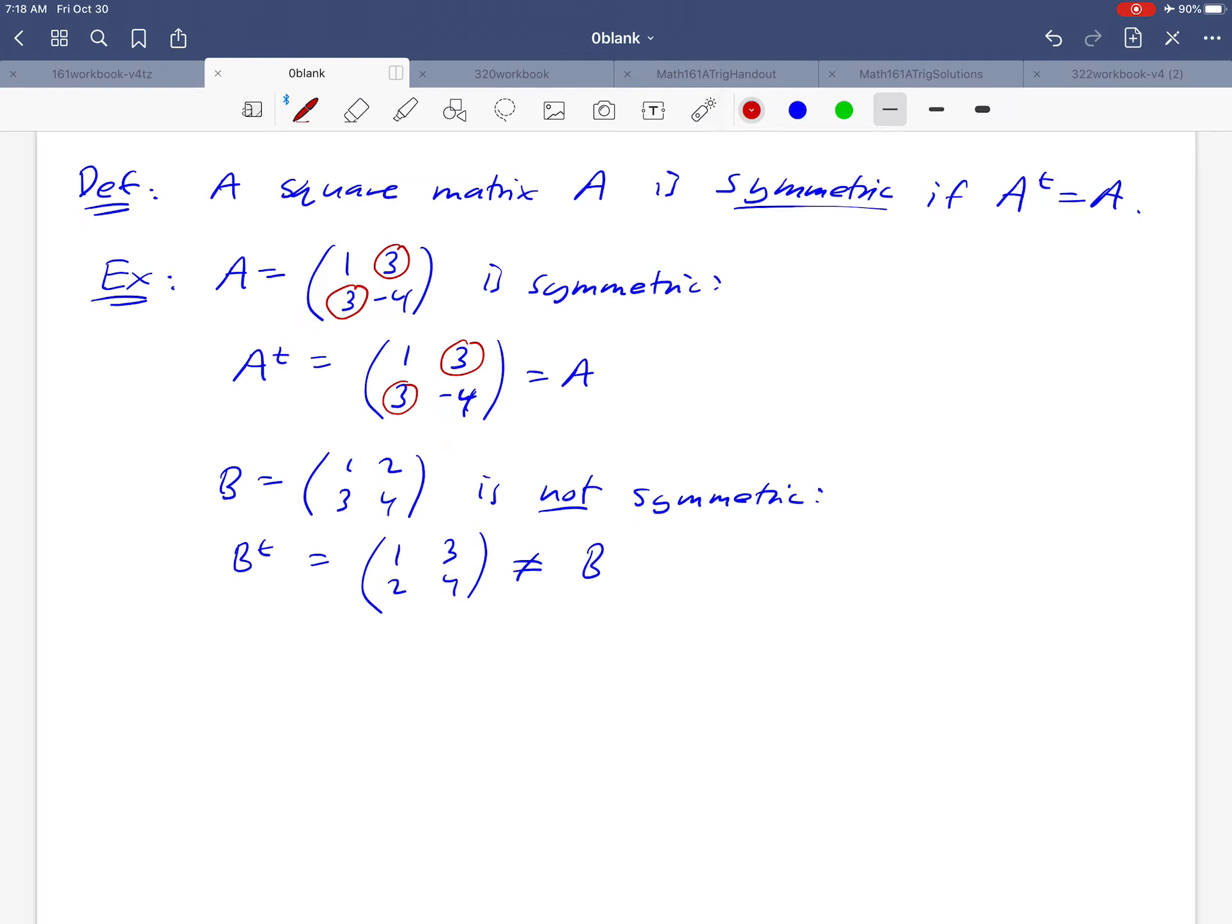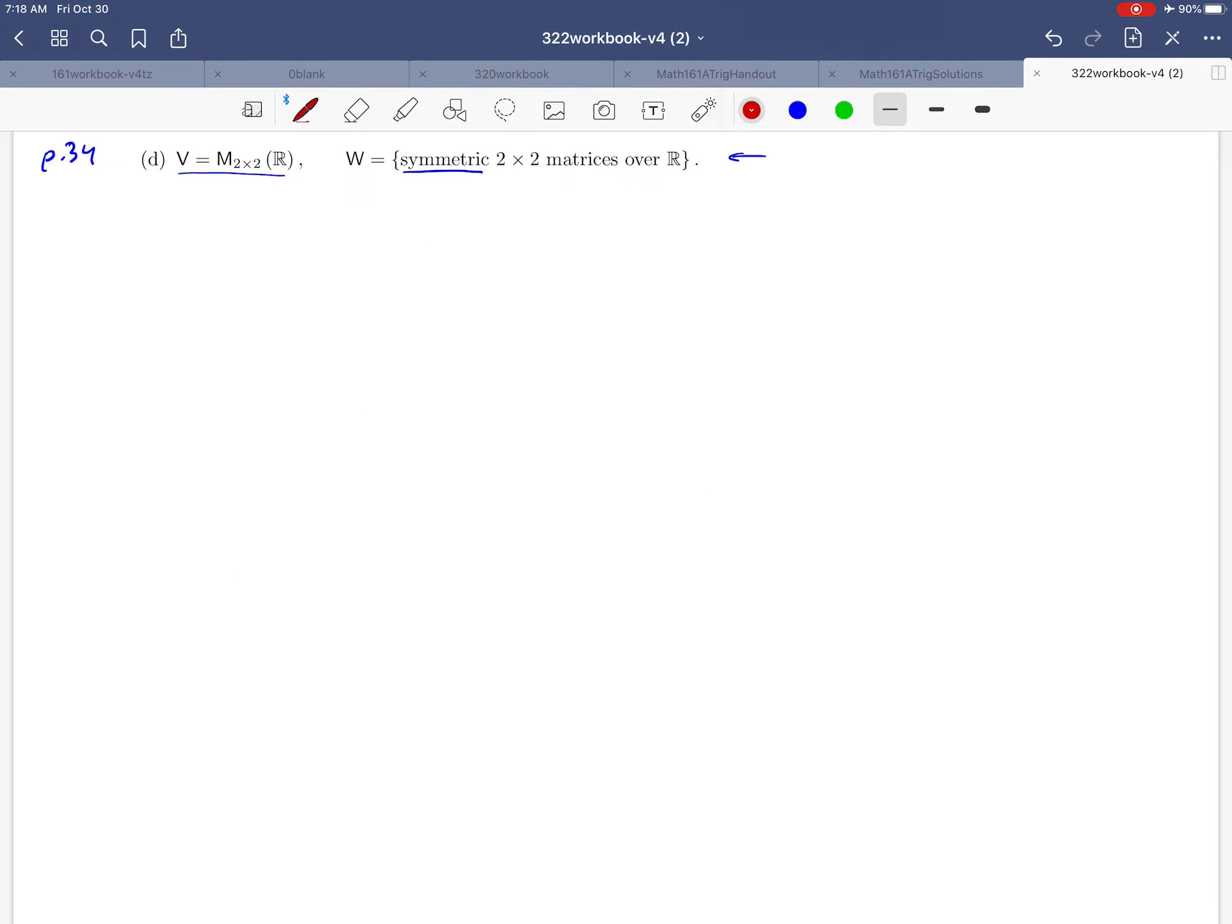So with that in mind, let's go back and see if we can do this example. A way of writing, kind of generally, the set of symmetric matrices is to notice that a matrix 2x2 is going to be symmetric if it has this form: A, B, B, C, where A, B, and C can be in R. Again, what's important is that those two numbers be the same for this to be symmetric.